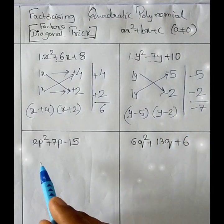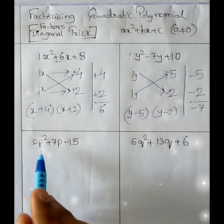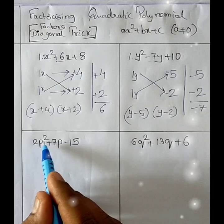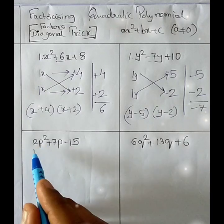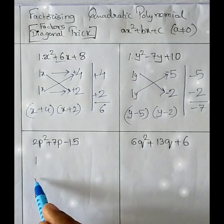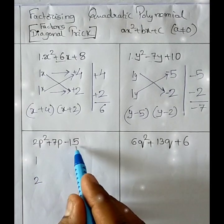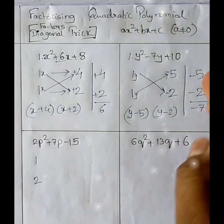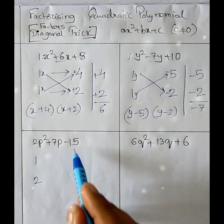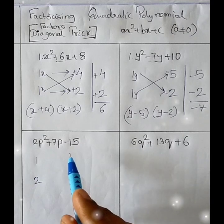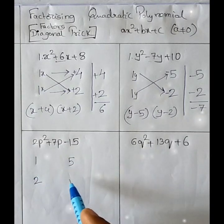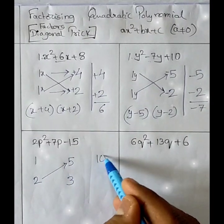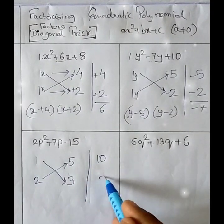Let us go for one more example where the coefficient is other than 1: 2p² + 7p − 15. The coefficient of p² is 2, and the factors of 2 are 2×1 — writing smaller factor first, then bigger. For the constant 15, we take the factors as 5×3, writing the bigger one first: 5 and 3. Diagonal multiplication: 2×5 = 10 and 1×3 = 3.